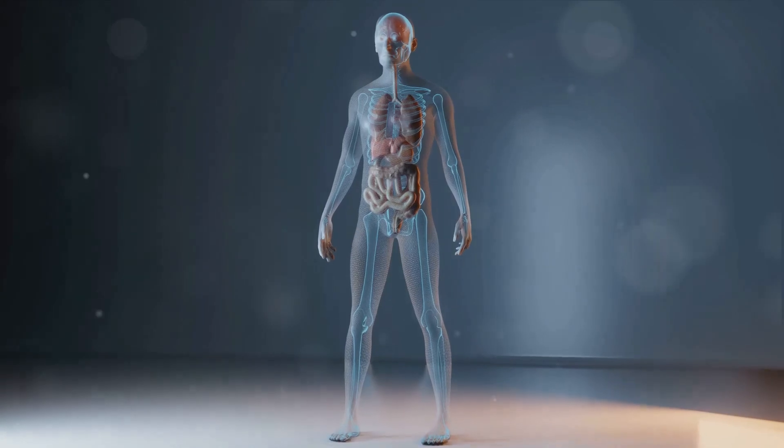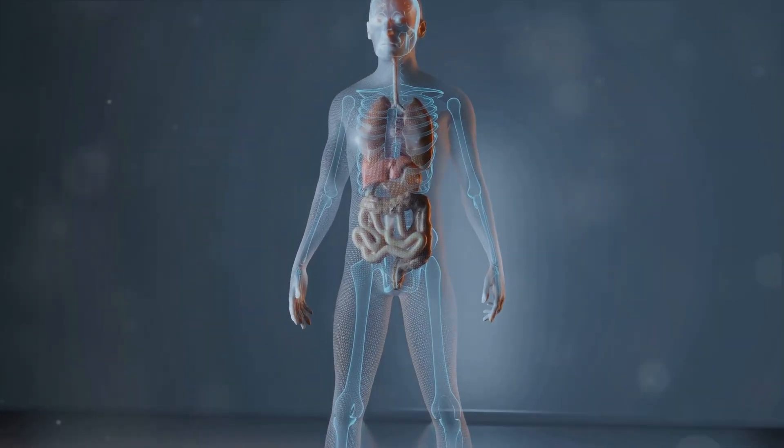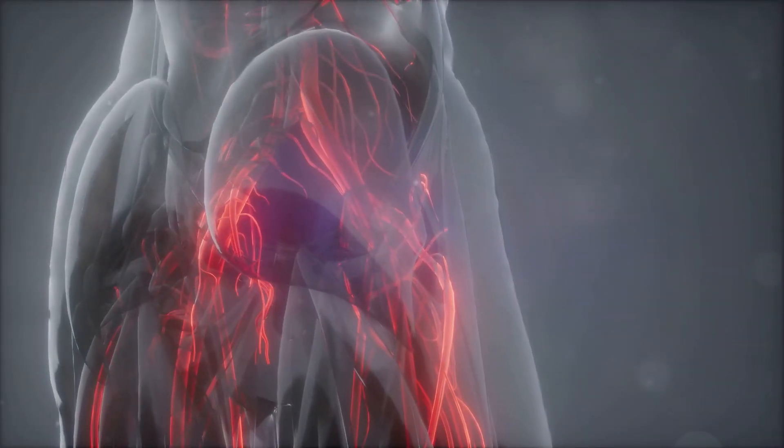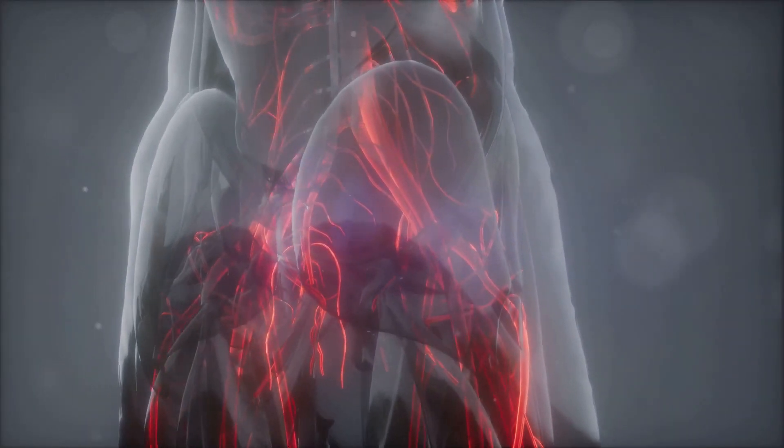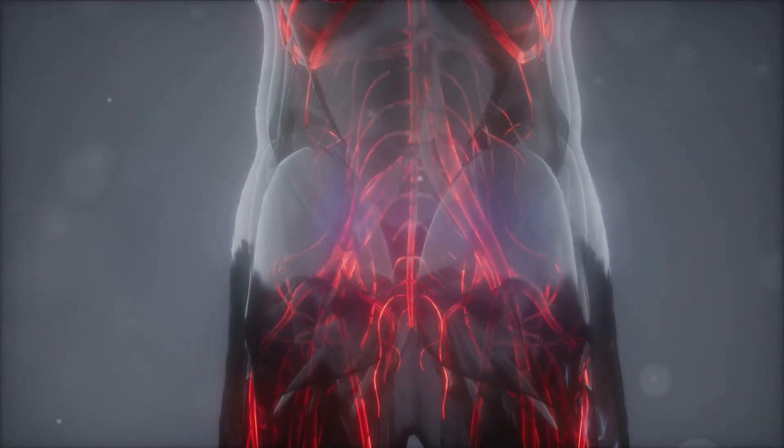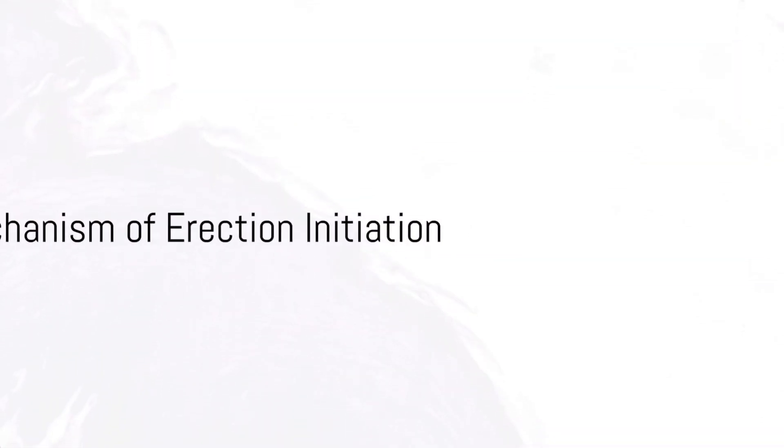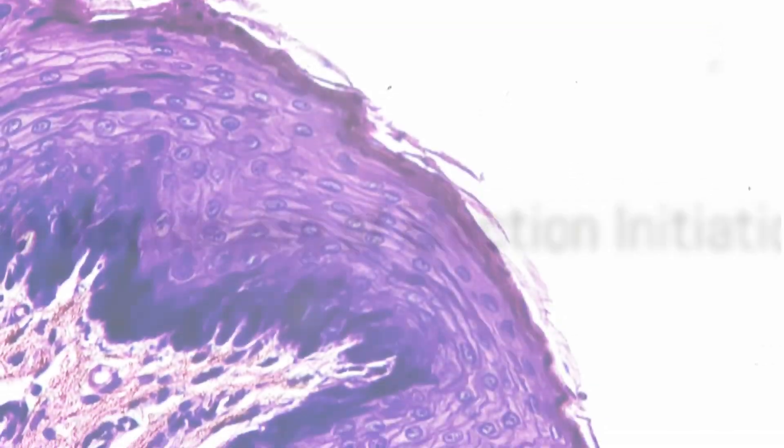The penis contains two cylindrical tissues called the corpora cavernosa. Now picture these like spongy reservoirs ready to fill up with blood at a moment's notice. Here's where nitric oxide steps into the spotlight.